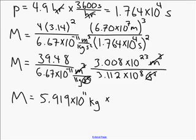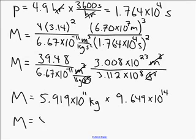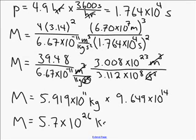So this number is going to be multiplied by 9.649 times 10 to the 14. And no units left over there. So the final number, I get 5.7, I'm rounding a little bit here, times 10 to the 26 kilograms.